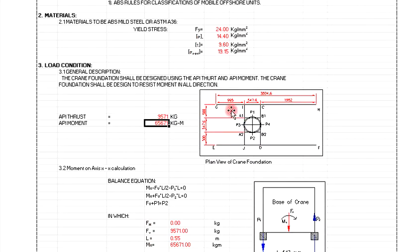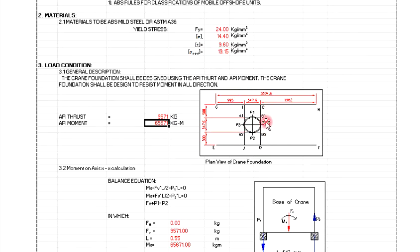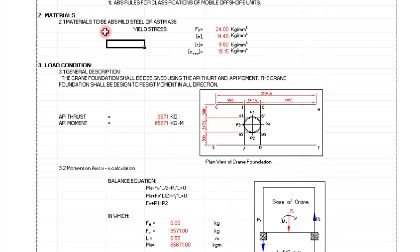For the plain view of the crane foundation, you need to make a sketch and determine points A, B, C, D, E, and F on the crane foundation. The crane foundation is designed using the applied thrust and applied moment, and must also be designed to resist moment in all directions.